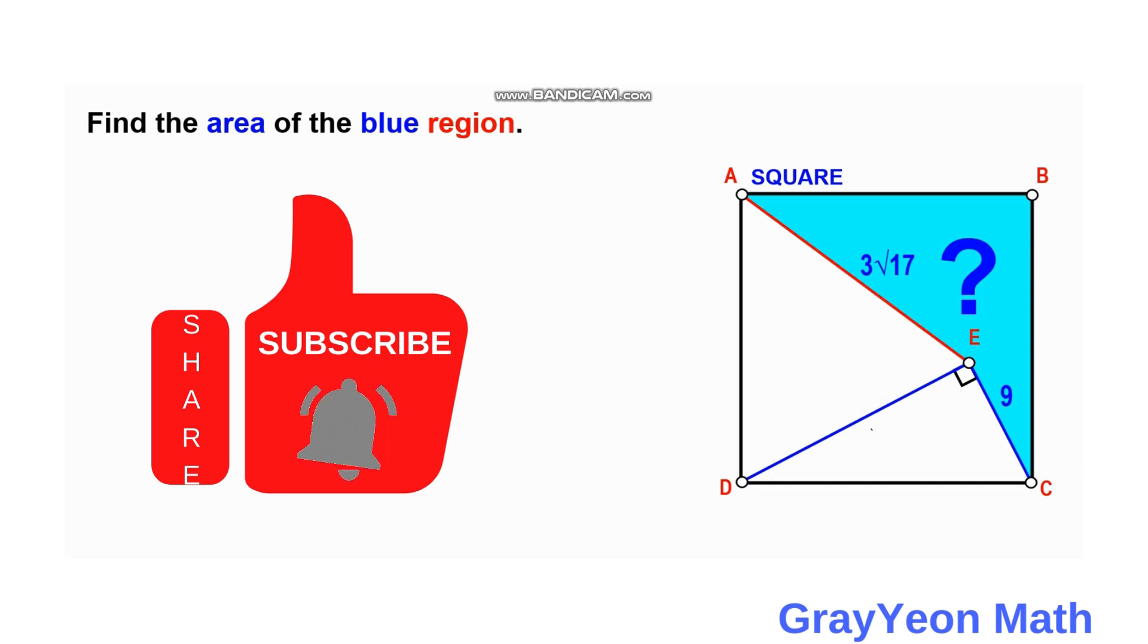The blue region is bounded by the segments AB and BC, which are the sides of the square, and this AE which has a measure of 3 square root 17 units, and this EC with an unknown length.